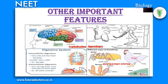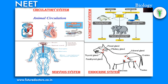In animals like earthworm, leech, frog, etc., moist skin acts as a respiratory surface. This is called cutaneous respiration.